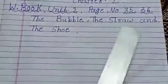The bubble, the straw and the shoe. Workbook page number 35, look, listen and repeat.